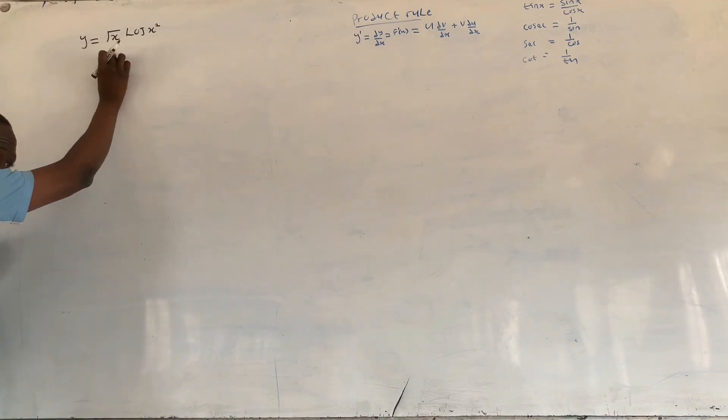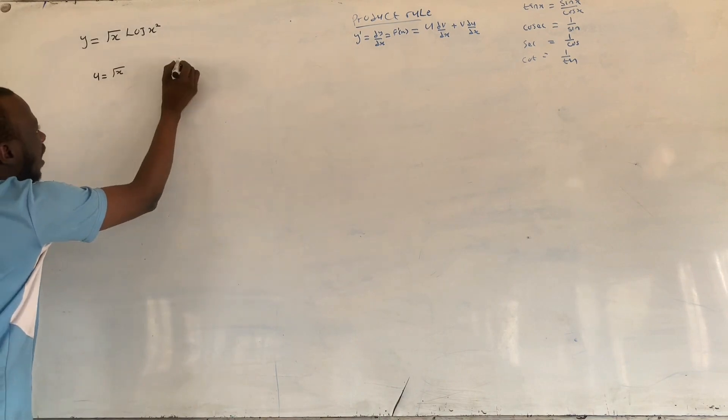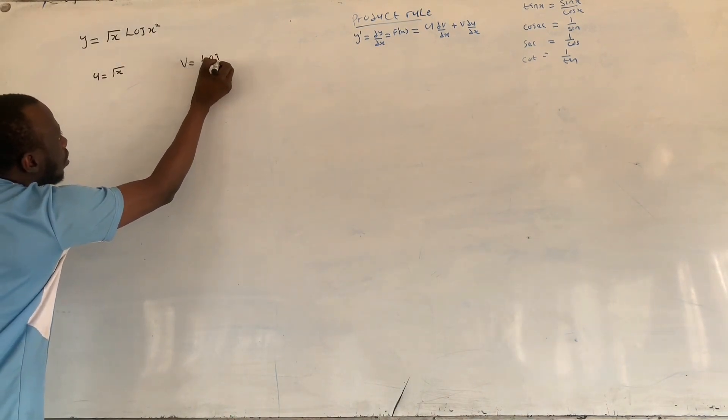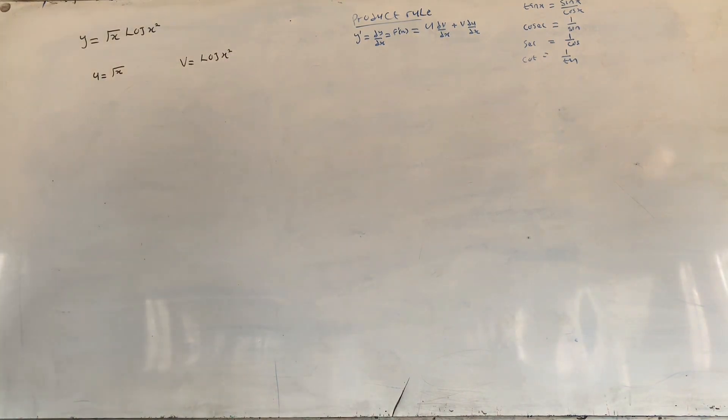Our u here equals root x and our v here equals what? Log x squared. So then we differentiate both u and v. Remember that we say whenever you find for example root x, it's always something like one over two root x.